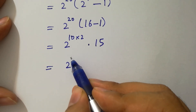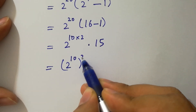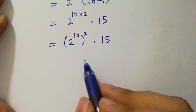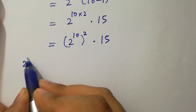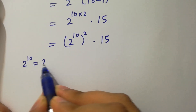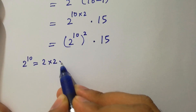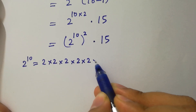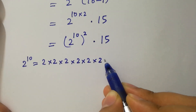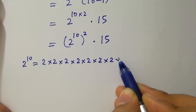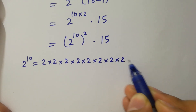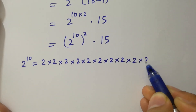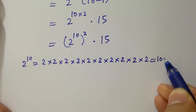It will be (2^10)^2 times 15. Computing 2^10: 2, 4, 8, 16, 32, 64, 128, 256, 512, 1024. So 2^10 equals 1024.